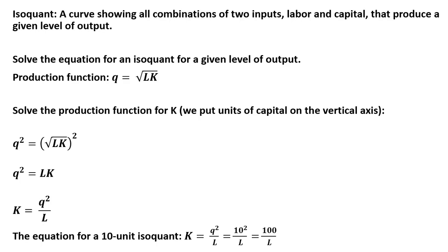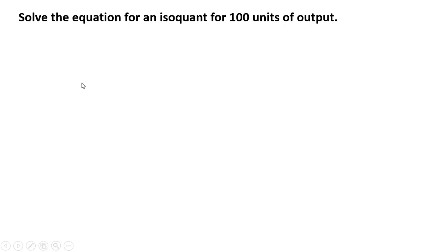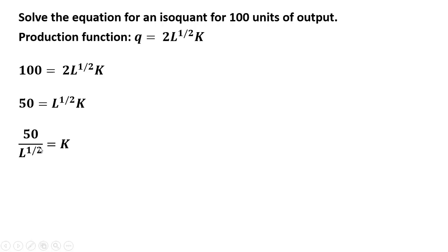All right, let's do another example. We want to solve the equation for an isoquant for 100 units of output. Here is our production function. I'll just set q equal to 100 right at the beginning here, and then I'm going to divide through by 2. So 50 equals the following. I'm going to divide through by L to the 1 half, and we have an equation for an isoquant for 100 units of output.